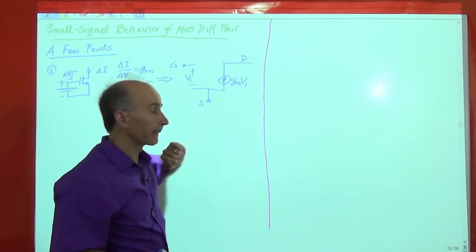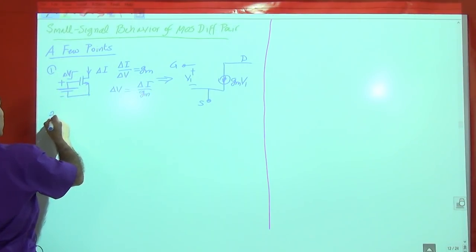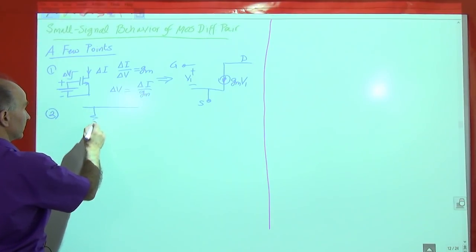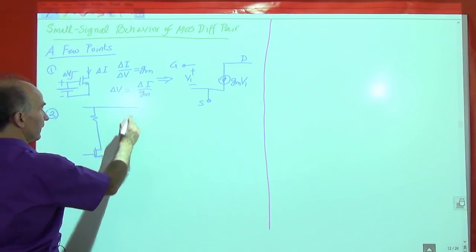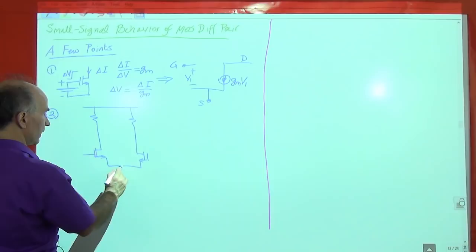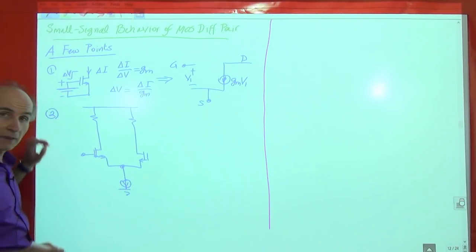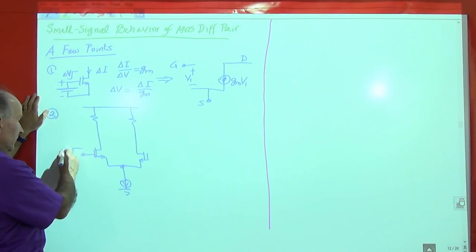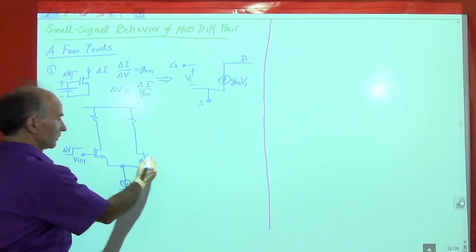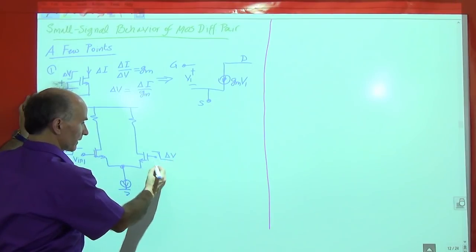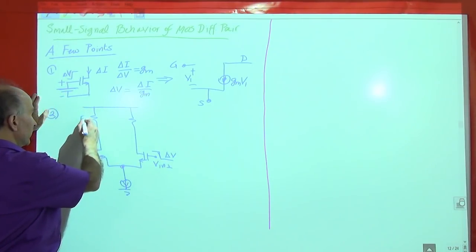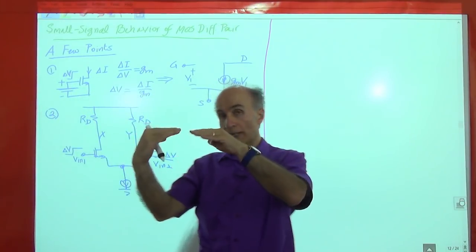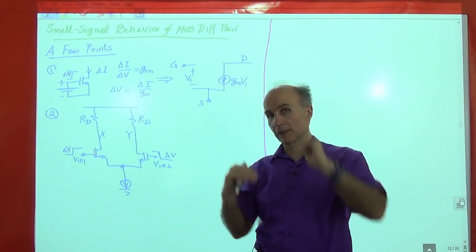The next observation is for a differential pair where we apply a small differential change to the input. We assume that V_in1 goes up by delta V and V_in2 goes down by delta V. The load resistors are Rd. Initially V_in1 and V_in2 are at the same potential, then one goes up by delta V and one goes down by delta V.